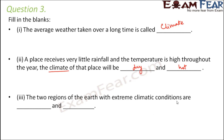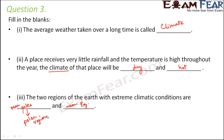The two regions of the earth with extreme climatic conditions are the polar regions and the equatorial regions. Near the poles, the areas are not much exposed to the heat of the sun, so it is extremely cold. Near the equator it is moderately hot — that's why India, being located near the equator, is moderately hot.